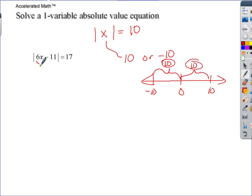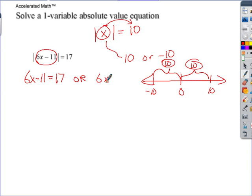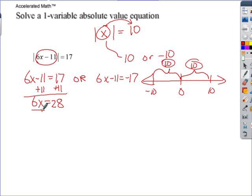This example is a little more complicated, but it's the same concept: the absolute value of something equals a number. Here it equals 17, so either 6x minus 11 equals 17, or 6x minus 11 equals negative 17. Then we solve each equation separately. For the first: 6x equals 28.